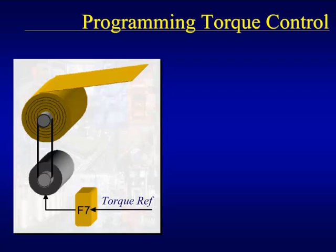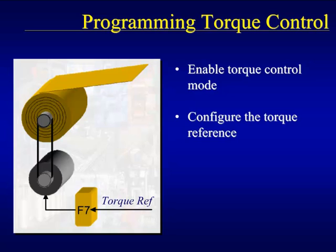Once the system has been constructed, programming Torque Control on the drive is accomplished in three steps. First, Torque Control must be enabled in the drive. Second, the torque reference must be configured for operation. And last, a speed limit must be configured.